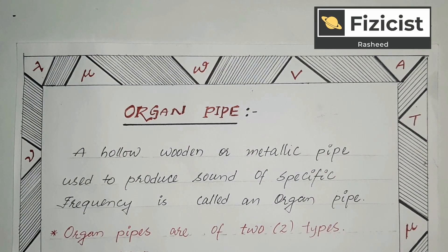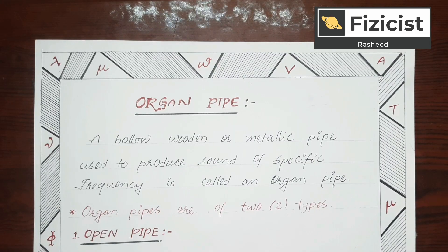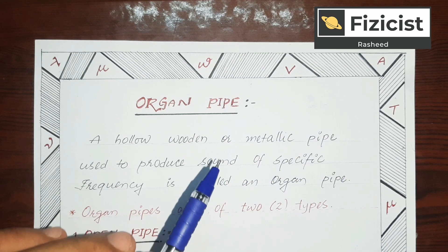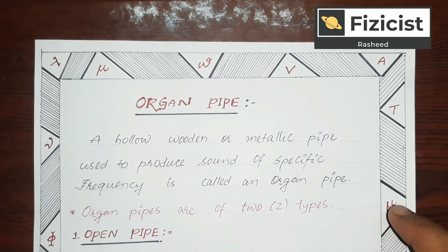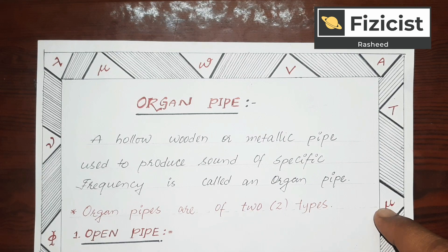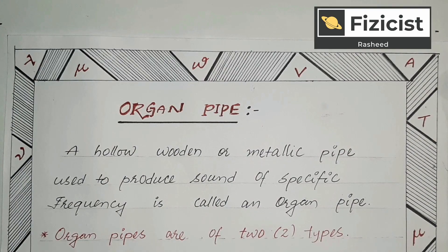Dear students, I am back with another video on waves. As we have discussed so many basic concepts in our earlier videos, now in this video we are going to cover much more interesting concepts associated with waves. Let us begin with the first topic: organ pipe. An organ pipe is a hollow wooden or metallic pipe used to produce sound of specific frequency. This principle is used in making flutes and other musical instruments to produce sound of a particular frequency.